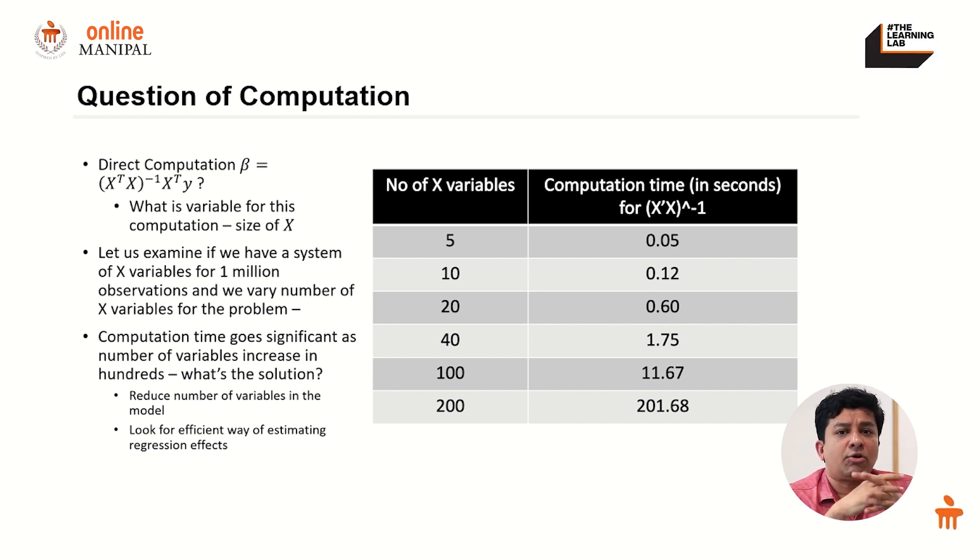Are these two things equivalent? They are indeed equivalent. But why does the computation time differ so much? We've studied regression beta estimation using direct computation using the formula x prime x inverse x prime y. The computation aspect essentially ties to the size of the matrix X.